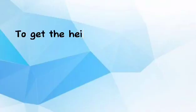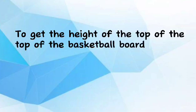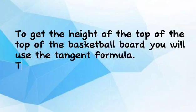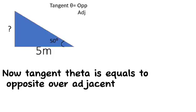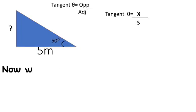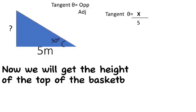To get the height of the top of the basketball board, you will use the tangent formula. Tangent theta is equals to opposite over adjacent. Now we will get the height of the top of the basketball board.